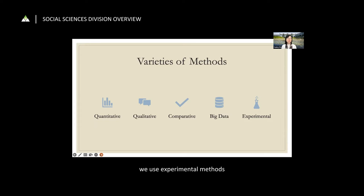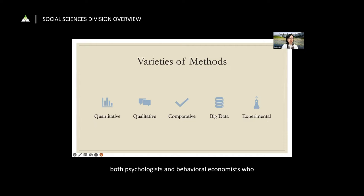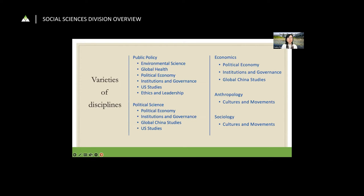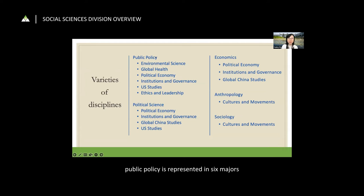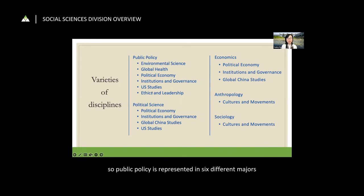The disciplines represented in our majors include public policy, political science, economics, anthropology, and sociology. Public policy appears in six different majors, political science in four, economics in three, while anthropology and sociology each appear in one. This means if you major in political economy, for instance, you can choose tracks in public policy, economics, or political science.